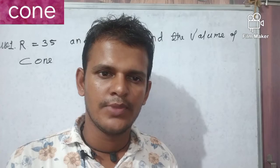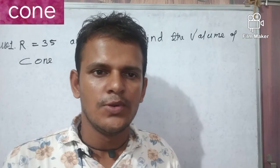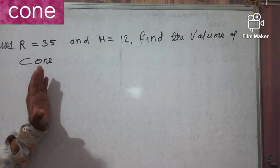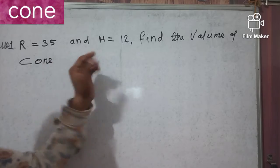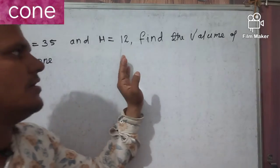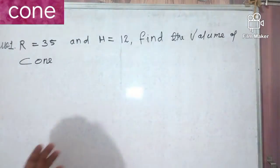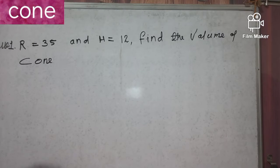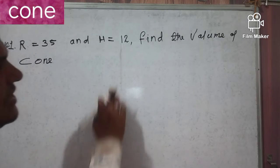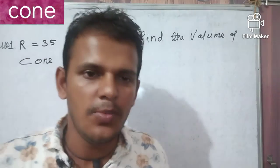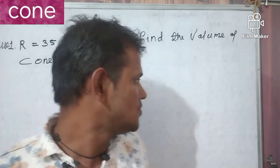Welcome to our YouTube channel, One Job Discovery. The topic we are looking at today is cone problems. The question is: radius is 35 and height is 12, find the volume of the cone. So radius is given as 35 and height is given as 12. What is the volume of the cone?